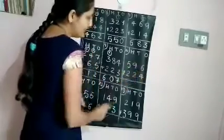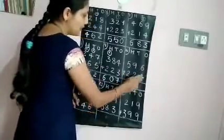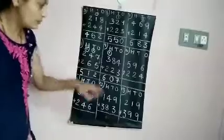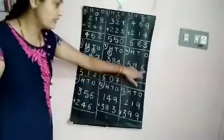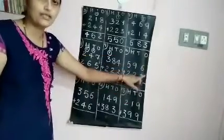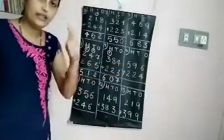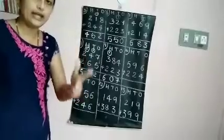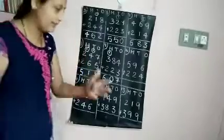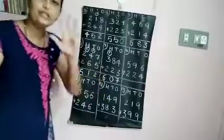596 plus 224. Here you have 6 plus 4 in the ones column. 6 after: 7, 8, 9, 10. 6 plus 4 is 10.